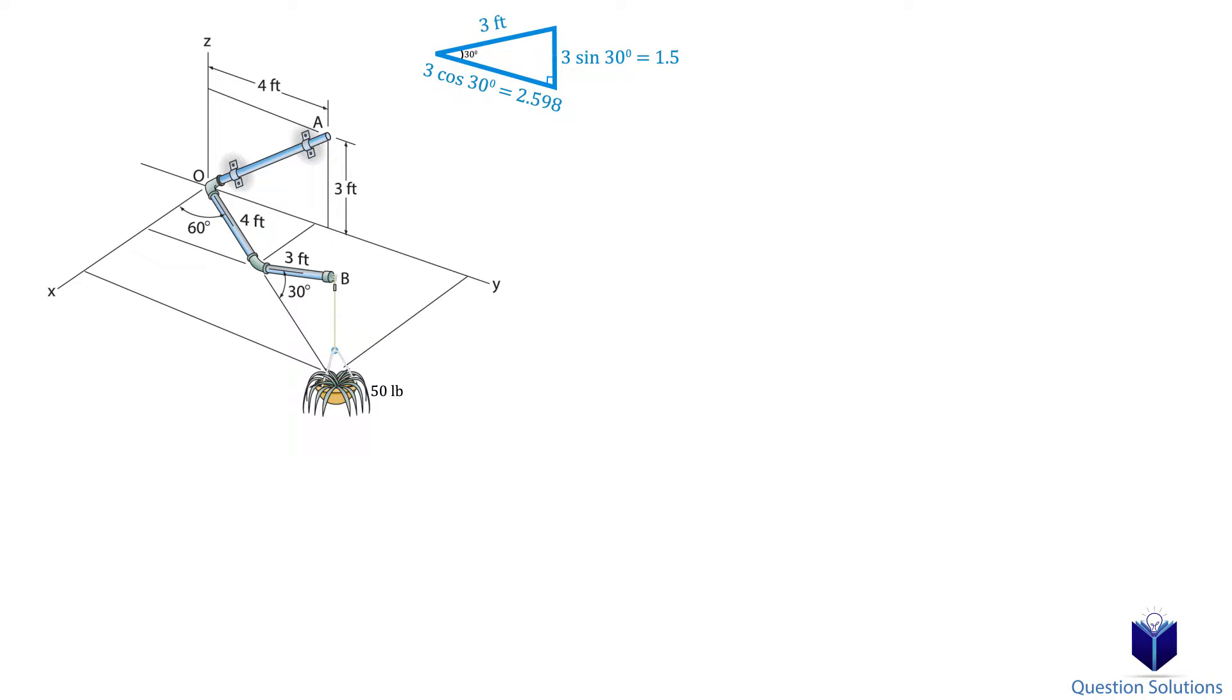Now let's look at the whole length as one big triangle with an angle of 60 degrees. From this triangle, we can figure out the y length. Now that we have the lengths, we can write down our j and k components.